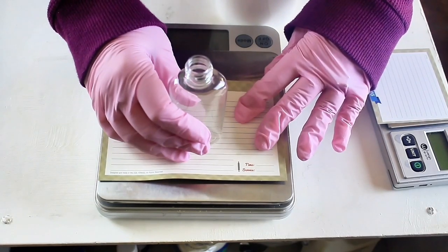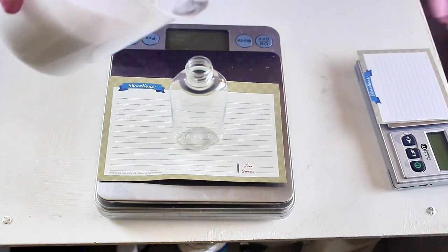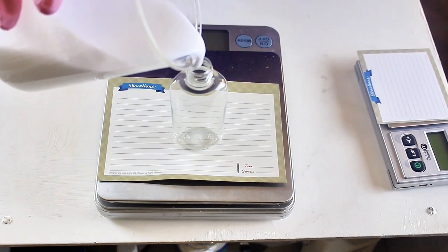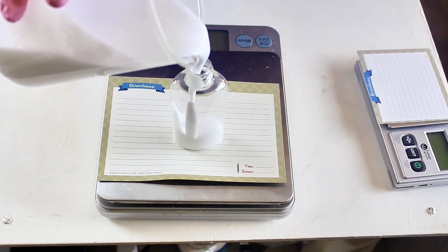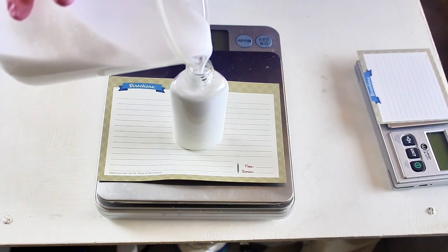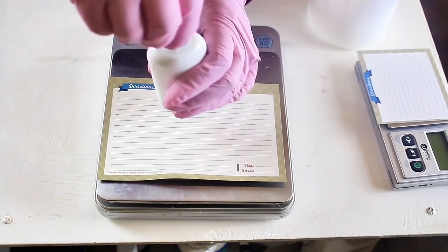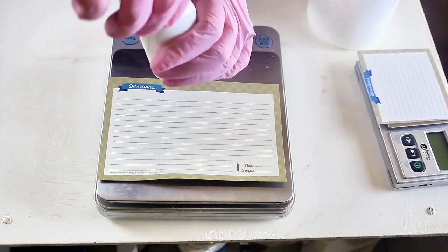So that, especially the preservative, gets into every square inch of the product. And then I'll let this cool down to room temperature. And then I start pouring it into my bottles or jars and then just cap it up.